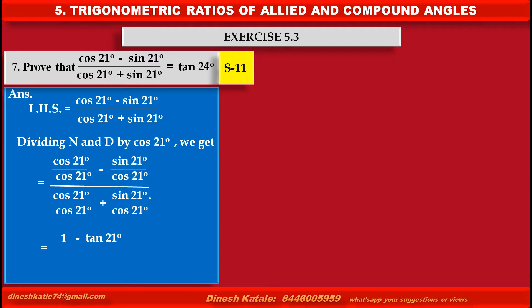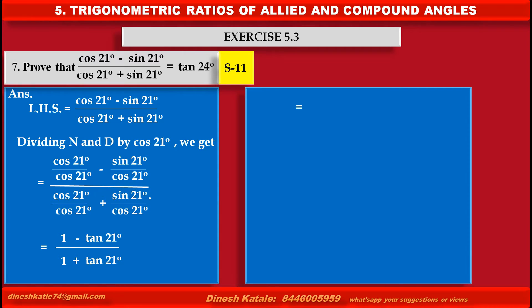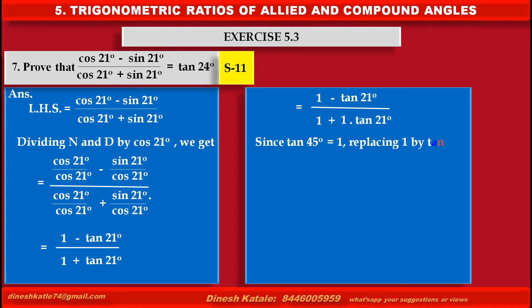This simplifies so the first term of the numerator becomes 1, minus the second term becomes tan21, upon 1 plus tan21. Writing the above step, only changing the second term of the denominator as 1 into tan21. Since tan45 is equal to 1, replacing 1 by tan45.